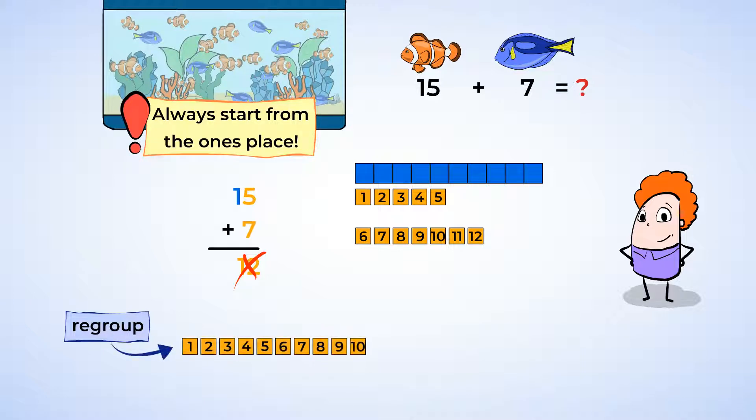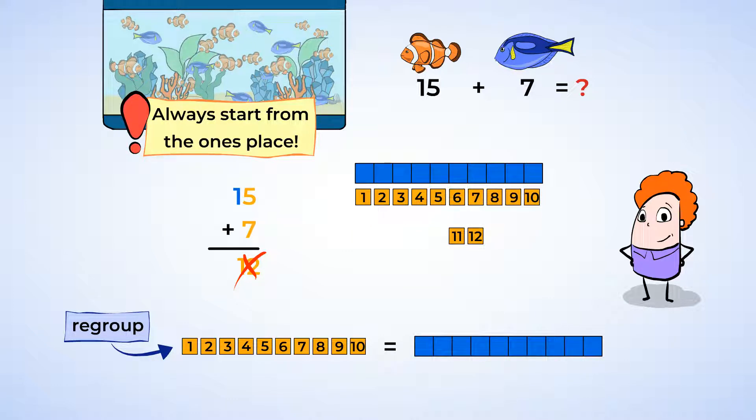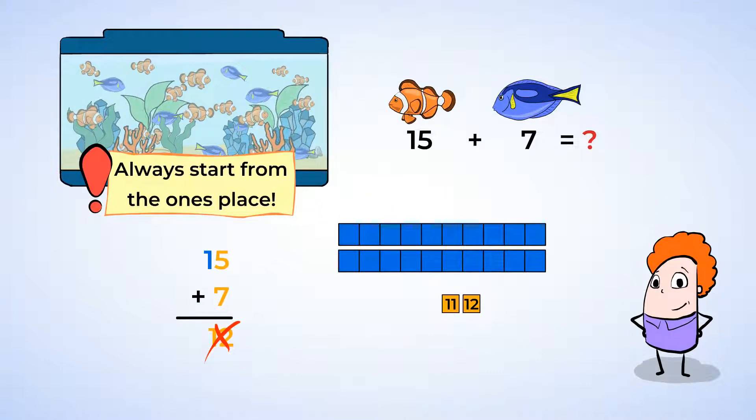When you regroup ones, it means that you take 10 ones and make a new group of 10 with them. And you move the new group of 10 to the tens place. Like this, take 10 unit cubes and replace them with a 10 stick. We didn't change the amount of cubes, we just grouped them differently.